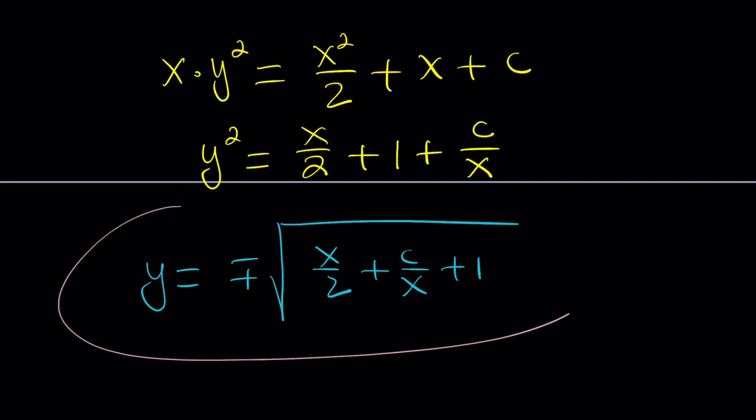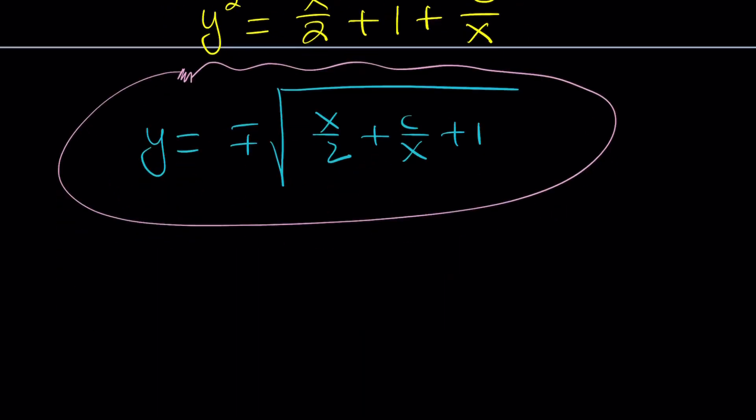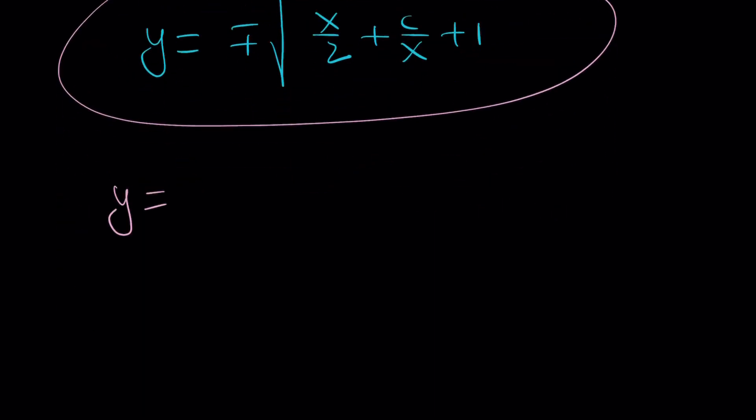Of course, c is a constant, so you can replace c with any real number. Make sense? Now let's check something out. Do you think this is going to give us all the solutions? Well, there are two solutions, so we're going to have to pick one. Let's take the positive solution: √(x/2 + c/x + 1). I want to differentiate this and plug it in. What is y'?